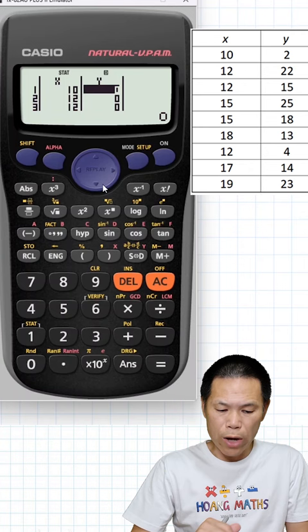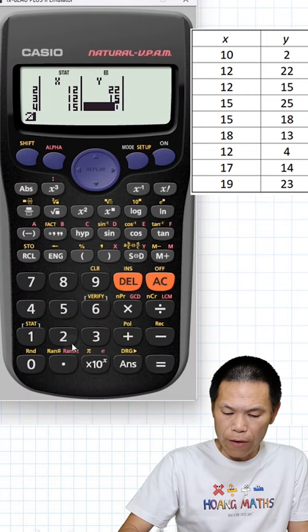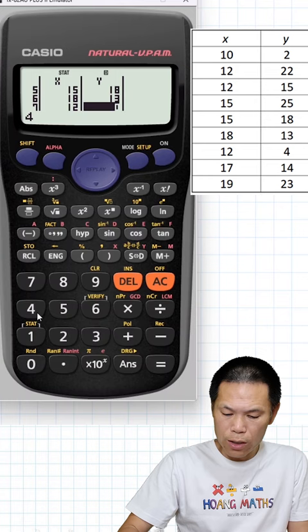Enter 2, enter, 22, enter, 15, enter, 25, enter, 18, enter, 13. Press equal, 4, equal, 14, equal, and 23, equal.